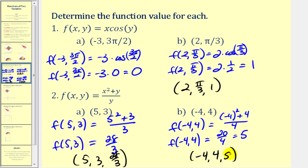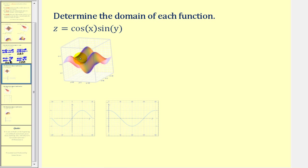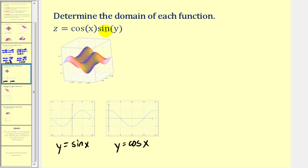Now let's talk about determining the domain of a function in terms of two variables. Since this function has two inputs, both x and y, all the possible values of x and y will make up the domain. Remembering basic functions like y equals sine x and y equals cosine x will help — for both of these, x can be any real number. So for a function like z equals x times cosine y, x and y can both be any real number, and the domain is all real numbers.